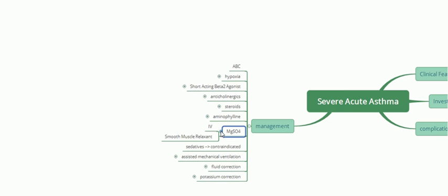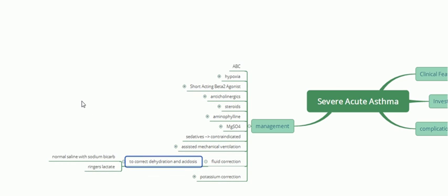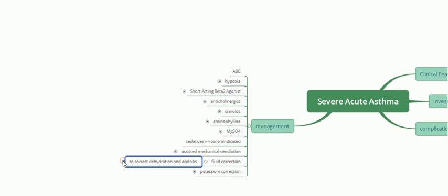IV magnesium sulfate can also be given as it is a smooth muscle relaxant. Sedatives are contraindicated because they can cause respiratory depression. Fluid correction is important since dehydration and acidosis are complications. Normal saline with sodium bicarbonate is given — sodium bicarbonate corrects acidosis and normal saline corrects fluid deficit. Ringer's lactate is preferred as it is more physiological than normal saline.